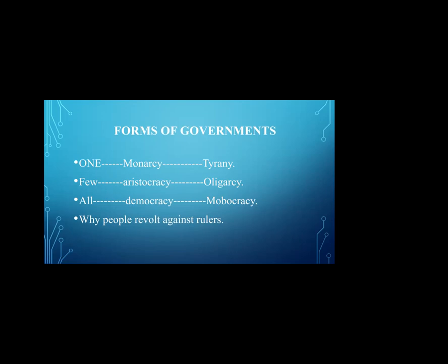In democracy, all the people are the rulers, and this democracy also changes into mobocracy. At the stage of democracy it is a good, ideal government supported by the people. But when it transforms into mobocracy, all those who have power become selfish and start exploiting the people. These are the reasons for revolts, movements, and protests. So only at the stage of bad government do people revolt against the rulers.